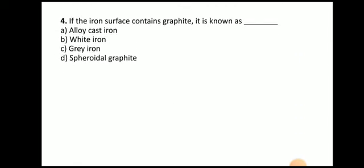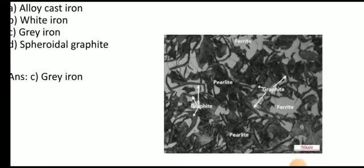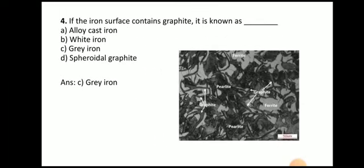Next question: If the iron surface contains graphite, it is known as — alloy cast iron, white iron, grey iron, or spheroidal graphite? The answer is grey iron. Here you can see the microstructure of grey iron, which contains ferrite, pearlite, and graphite. So if the iron surface contains graphite, it is known as grey iron.